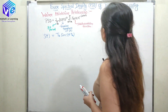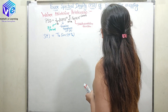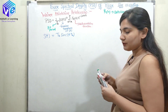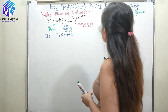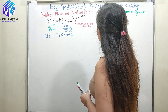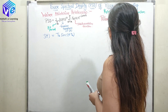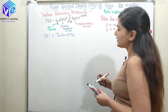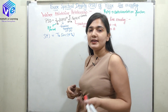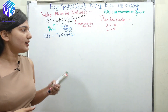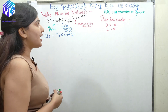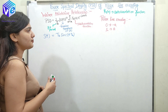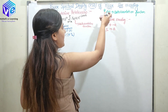S(f) has already been derived as T_b · sinc(f·T_b) — you can watch my previous video for the derivation. Now regarding the polar line encoding scheme: in polar line encoding, 0 is represented by −A and 1 is represented by +A, so 0 is represented by a negative amplitude level and 1 by a positive amplitude level.